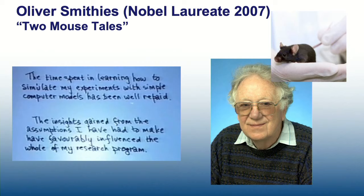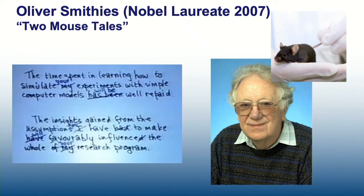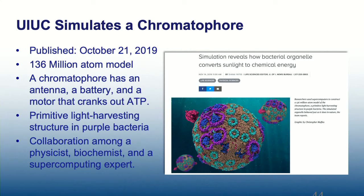Another hero of mine, Arthur Smithies, won the Nobel Prize, shared the Nobel Prize for the knockout mouse with Mario Capecchi from the University of Utah. He came to speak at NIH. I was privileged to hear his talk. He was talking about the time spent on learning how to simulate my experiments, and he changed that. He says, the time spent learning how to simulate your experiments with simple computer models will be well repaid, because the choices, the assumptions you have to make in order to make those models will teach you more about the science that you're trying to simulate than anything else. So this notion of simulation is huge.